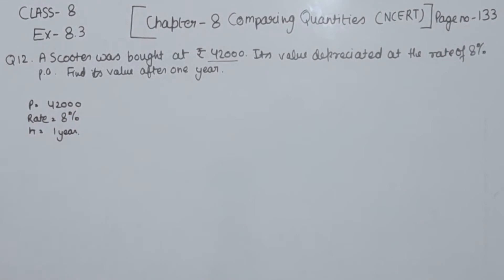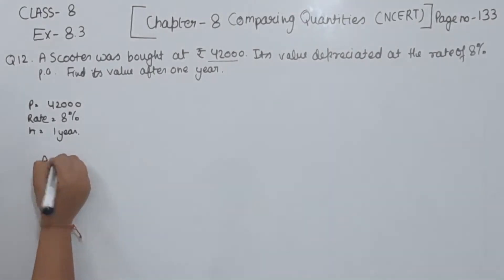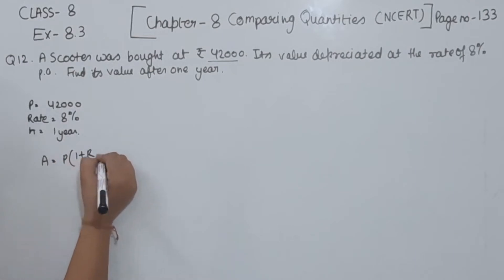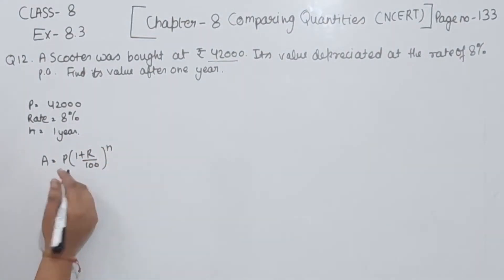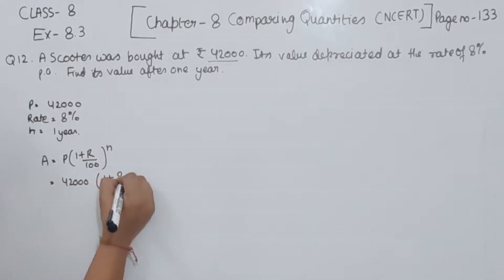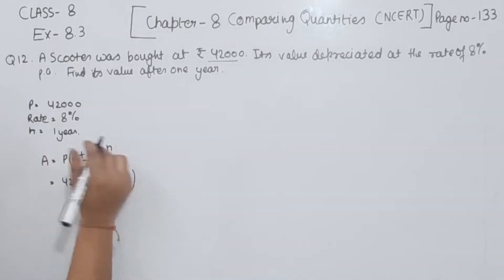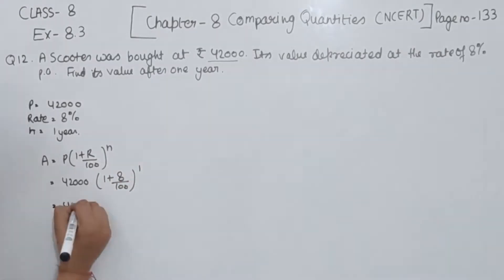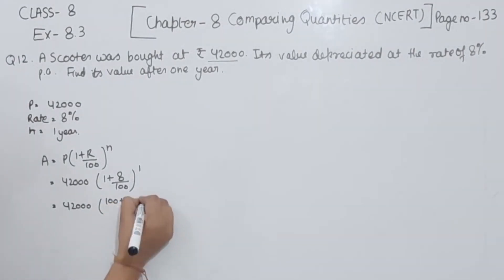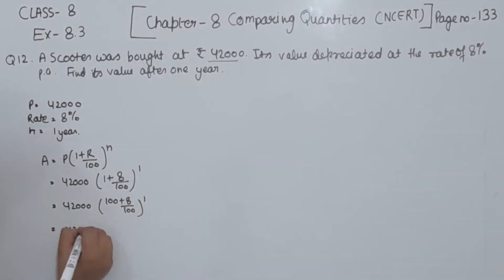So we are going to find the value after 1 year. We are going to find A, the amount. The formula is A = P(1 + R/100)^n. So P is 42,000, 1 plus rate 8 divided by 100, and time is 1. This gives us 42,000 × (100 + 8) / 100 to the power 1.